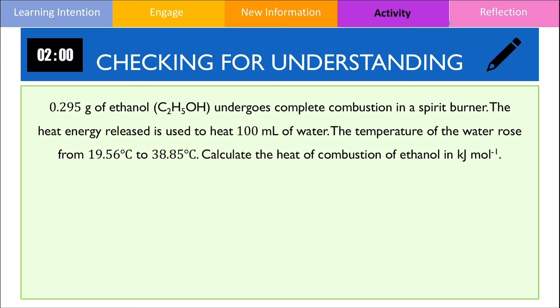The first thing that we're going to do is find out what is the change in temperature by subtracting 38.85 with 19.56 giving us an answer of 19.29 degrees Celsius. Using the formula q is equal to m times c times change in temperature, we can find the energy used to heat up water. Plugging these values into the formula will give us an answer of 8063.22 joules, which is then divided by 1000 to convert it into kJ.